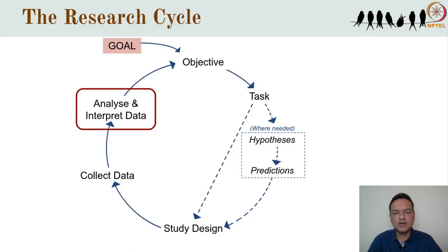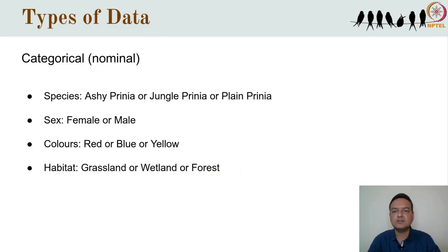So to start us off on this journey, let's take a look at the different types of data we might deal with during the course of our research. We start with categorical data, in which each entity we look at has some state that we can name. These are sometimes also called nominal data.